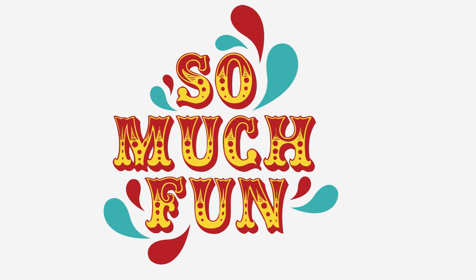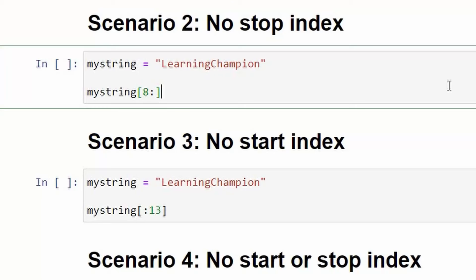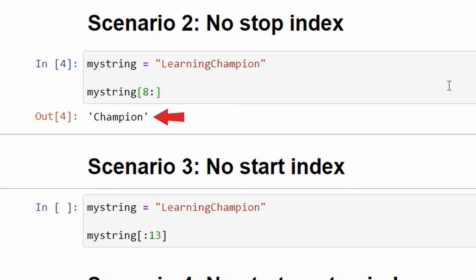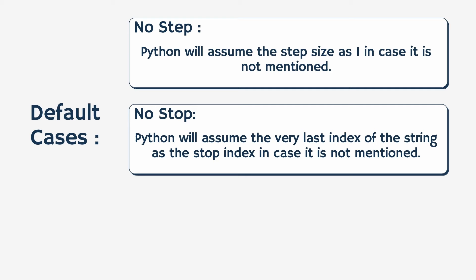Scenario 2: no stop index. Let's see what will happen when we only put the start index without the stop index. Here I have put the starting index as 8 and have not given any stop index. When I run this code, Python outputs the substring 'champion', which signifies that it has assumed the last index of the string as the stop index by default. Hence, in a scenario where we don't specify any stop index, Python assumes the very last index of the string as the stop index by default.